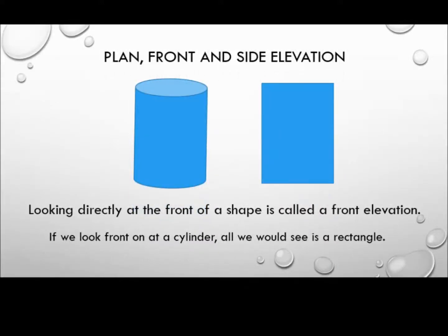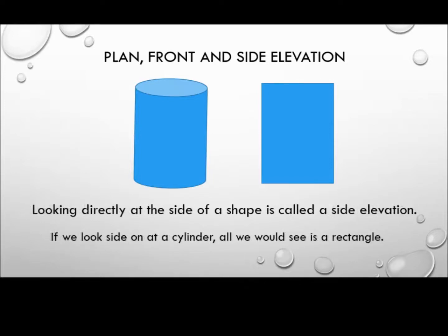Looking directly at the front of a shape is called the front elevation. If we look front-on at a cylinder, all we would see is a rectangle shape. Looking directly at the side of a shape is called the side elevation. Again, if we look side-on at a cylinder, all we would see is a rectangle.